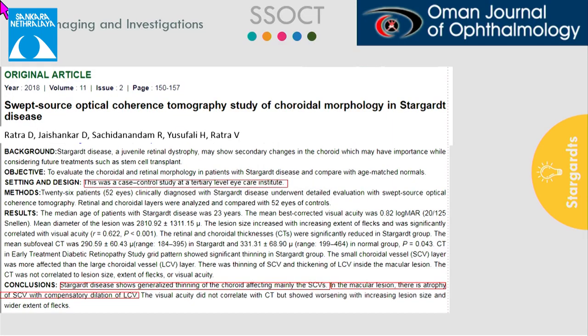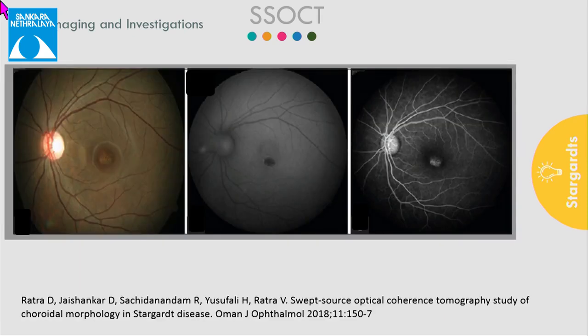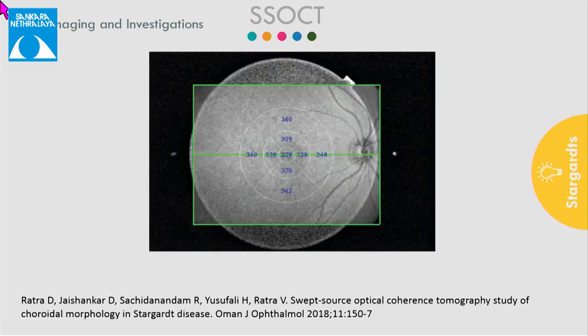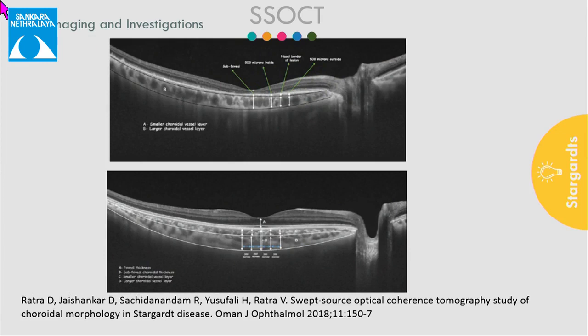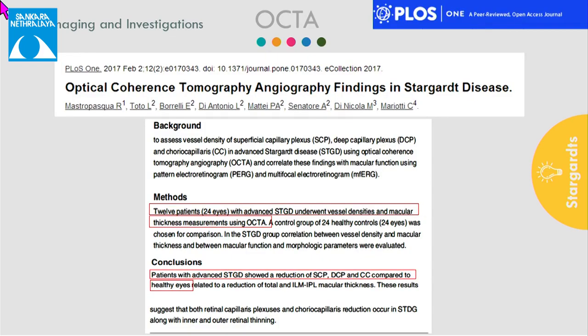Our in-house publication on SS-OCT features of Stargardt's disease was done in 52 eyes evaluated using SS-OCT. Choroidal thickness was measured using an ETDRS grid pattern and automated software. The results found thinning in the superficial choroidal vessels and compensatory dilatation of the large choroidal vessels. A similar OCTA study showed reduction in the choriocapillaris compared to healthy eyes, but this was found only in advanced cases.